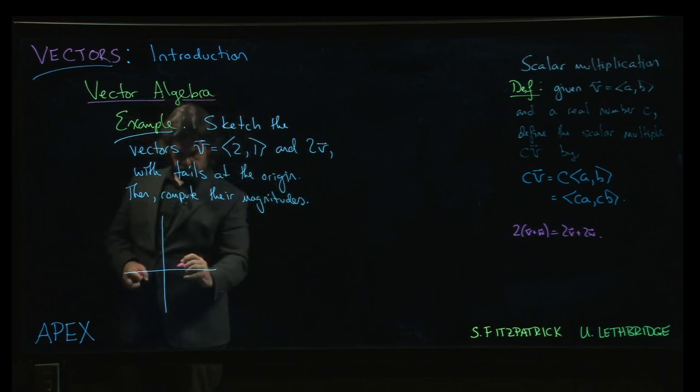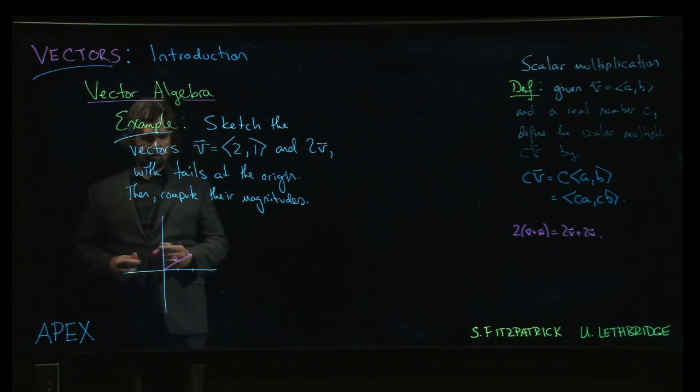All right, so we're going to go tails at the origin. So we go over 2 units, we go up 1, and we get the vector v, like so.